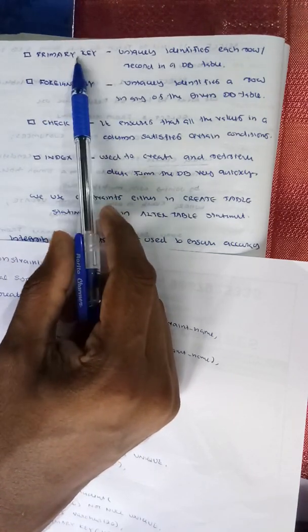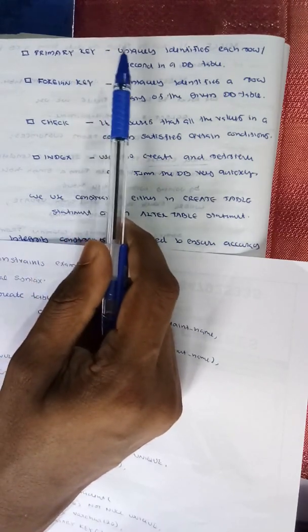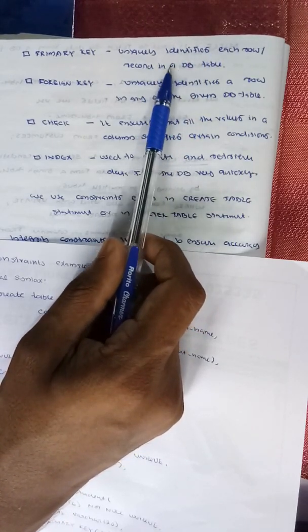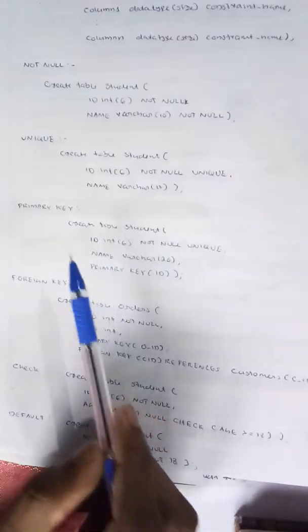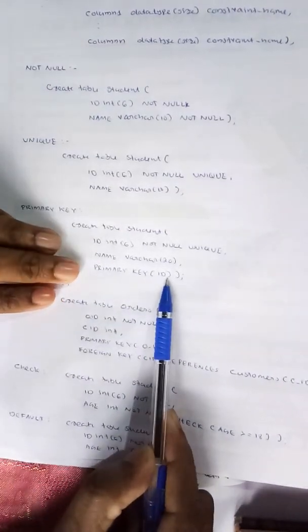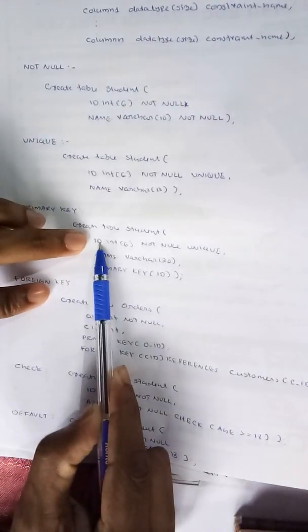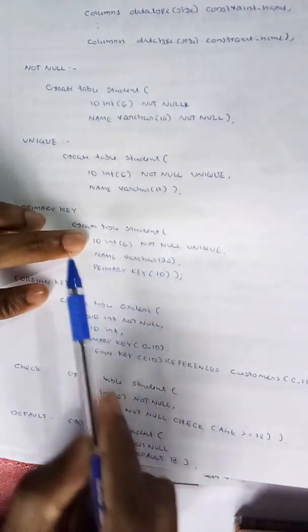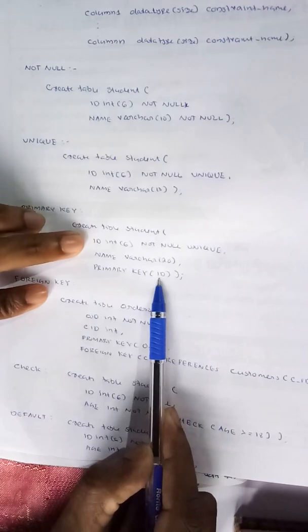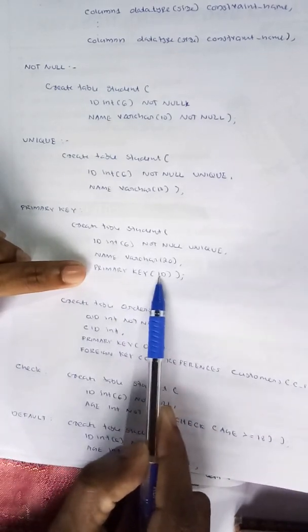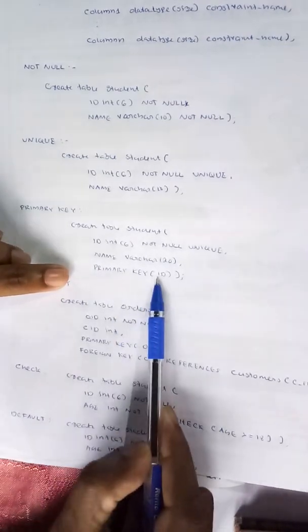What is PRIMARY KEY? A primary key uniquely identifies each row in a database table. For example: CREATE TABLE student, id INT(6) PRIMARY KEY, name VARCHAR. The primary key is on the id column — it uniquely identifies one row. You can also declare it separately: PRIMARY KEY (id). The id is the primary key that uniquely identifies each record.